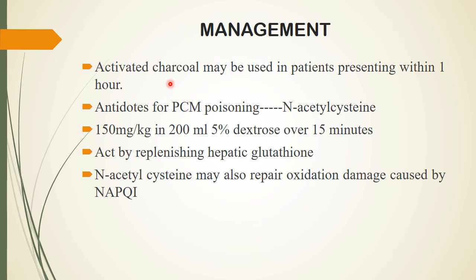If the patient is brought to the hospital, activated charcoal can be given — ideally within 1 hour, but up to 4 hours is acceptable. The antidote for PCM poisoning is N-Acetyl Cysteine, given at 150 mg per kg body weight in 200 ml of 5% dextrose. It acts by replenishing hepatic glutathione. N-Acetyl Cysteine may also repair oxidative damage caused by NAPQI.